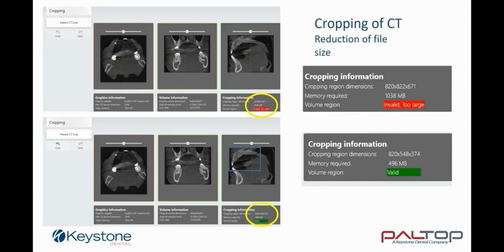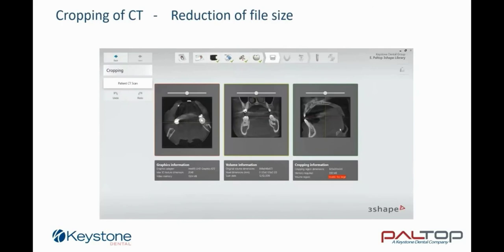The file size of a CBCT is dependent on many parameters, such as slice increment, voxel size and duration of exposure. 3Shape software will notify you if the volume region is too large, shown by the red icon. By cropping the CT to the area of interest only, the file size will be reduced. You can see the cropping area in the lower image, shown by the blue rectangle. In doing so, the volume notification will turn green. Here we can see the action in video format.